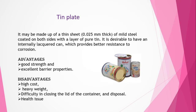Another conventional material is tin plate. It is made up of a thin sheet about 0.025 mm thick of mild steel coated on both sides with a thin layer of pure tin. It is desirable to have an internal lacquer coating inside the can to prevent corrosion. The main advantages are good strength and excellent barrier properties. The disadvantages are it is costly, heavy in weight, difficult to close the lid of the container, and disposal is also difficult.